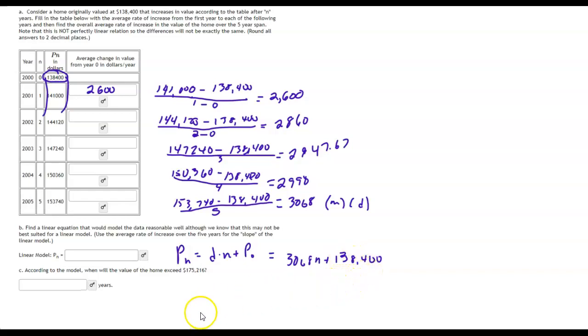So now the next question asks, according to the model, when will the value of the home exceed $175,216? So you could just keep estimating just by looking, but using the model means you're going to use this equation. And so we'll come up here and say for part C,